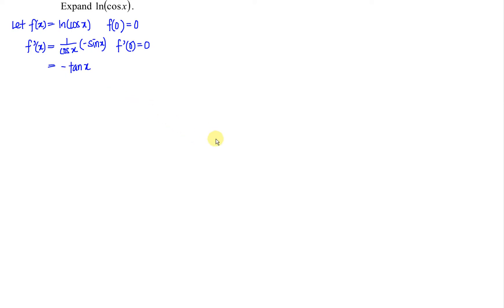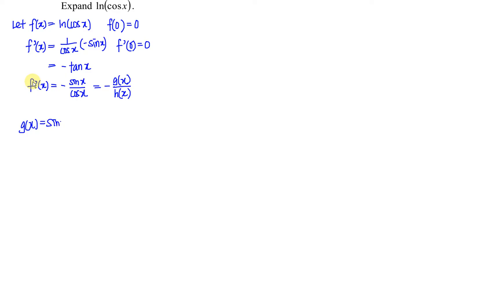From the first derivative, we have f'(x) equal to negative sin(x) over cos(x). We let g(x) equal sin(x) be the numerator and h(x) equal cos(x) be the denominator. So at point x equal to 0, g(0) is equal to 0.